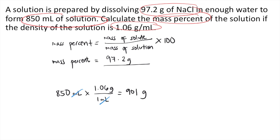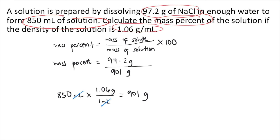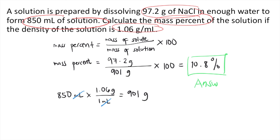So the mass of the solution is 901 grams, then times 100. So 97.2 divided by 901 times 100 equals 10.8%. The mass percent is 10.8%.